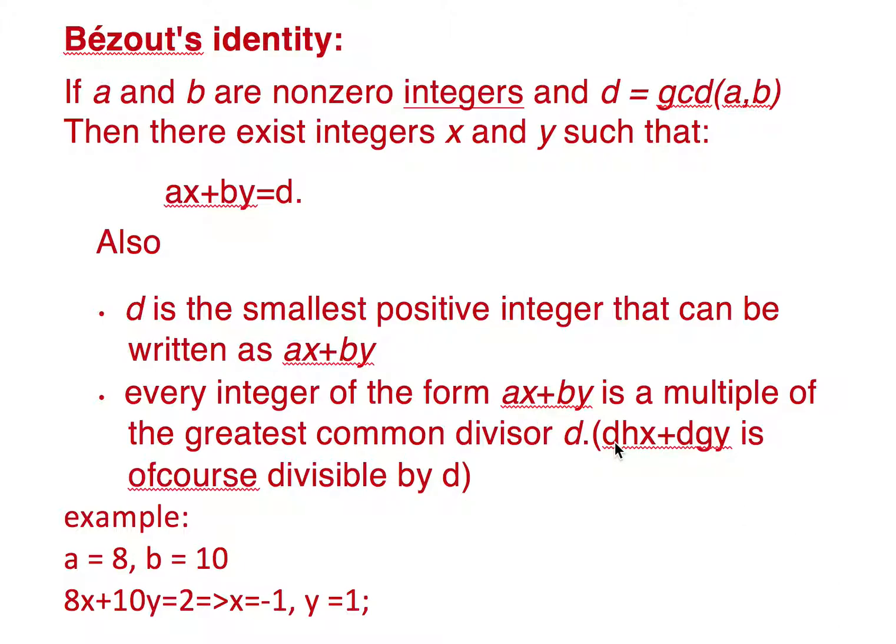Why is this true? Because both a and b have d as the greatest common divisor, which states that a and b both can be written as a multiple of d. So we write a as dh and b as dg.